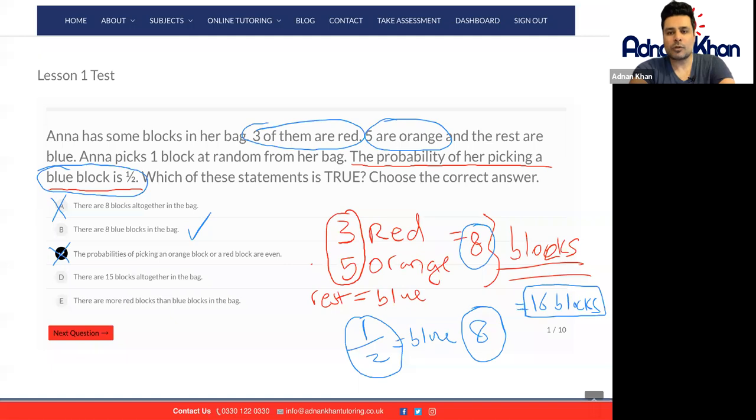Let's go to D. There are fifteen blocks altogether in the bag. We know that not to be true because altogether we know there are sixteen blocks in the bag.